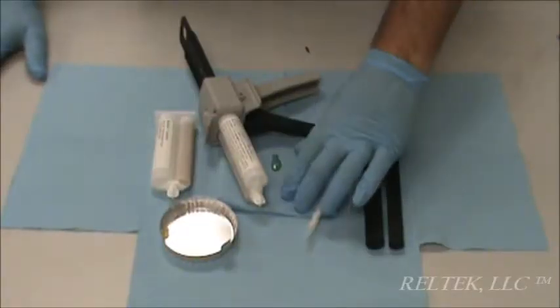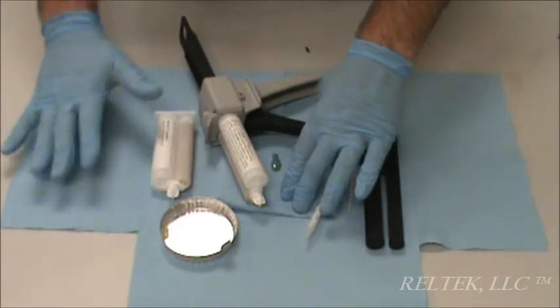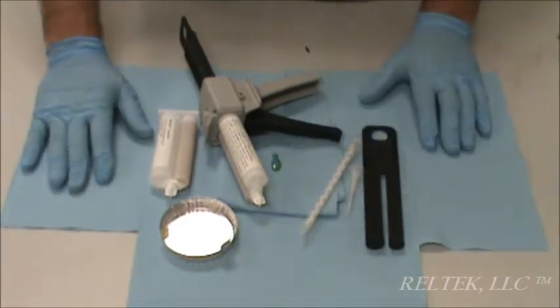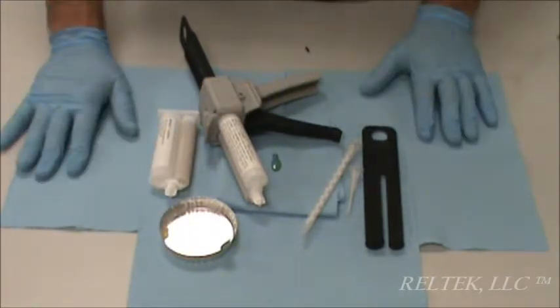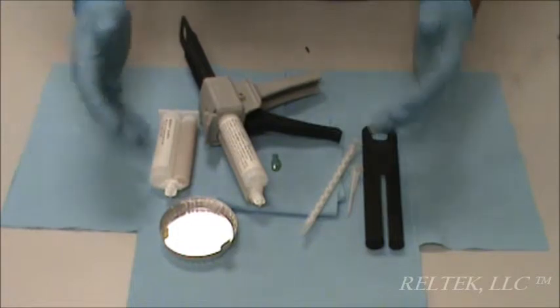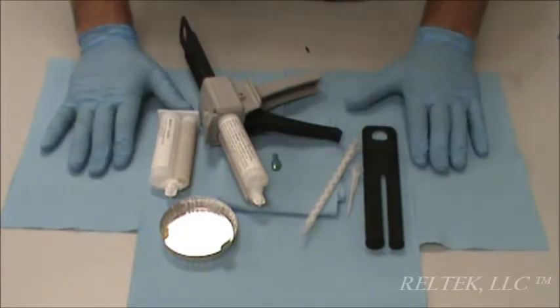To dispose of the burped material you can either finish mixing and throw it into the garbage. Once mixed it's completely inert or you can mix it with a remainder of your adhesive. That's how you burp a cartridge with the materials that we have here today. You can purchase them factory direct or through our website realtechllc.com and thank you for watching.